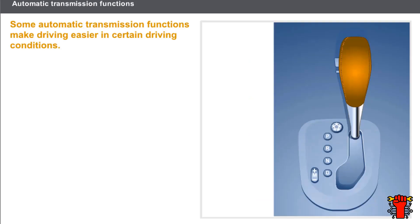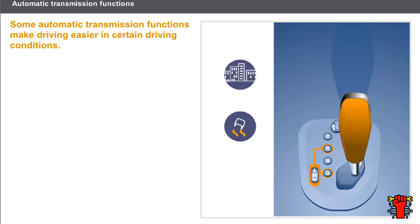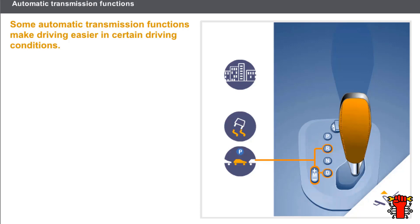Some automatic transmission functions make driving easier in certain conditions. The traction control function reduces wheel spin. The D3 automatic mode on some vehicles prevents gears higher than third from being selected. Automatic transmission also has a special feature: when the engine is turning slowly, it can drive the vehicle forward when the brake pedal is released. This phenomenon is known as creeping, and it allows certain manoeuvres to be carried out with the engine idling.